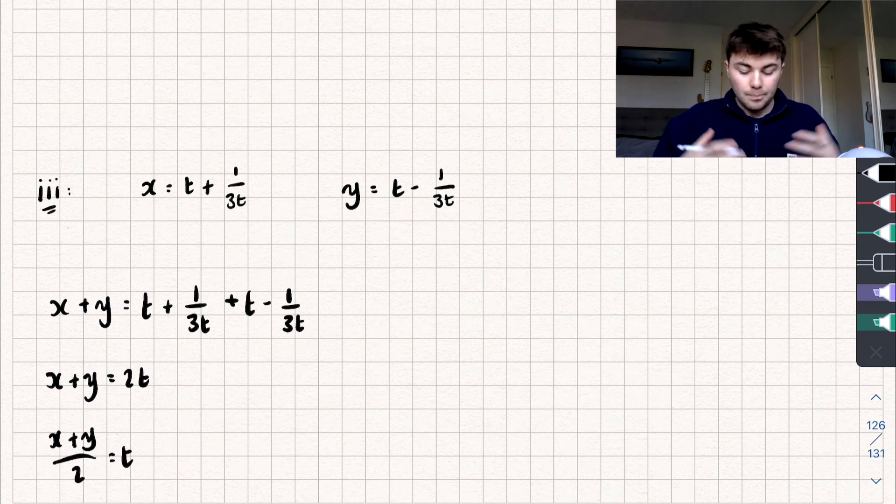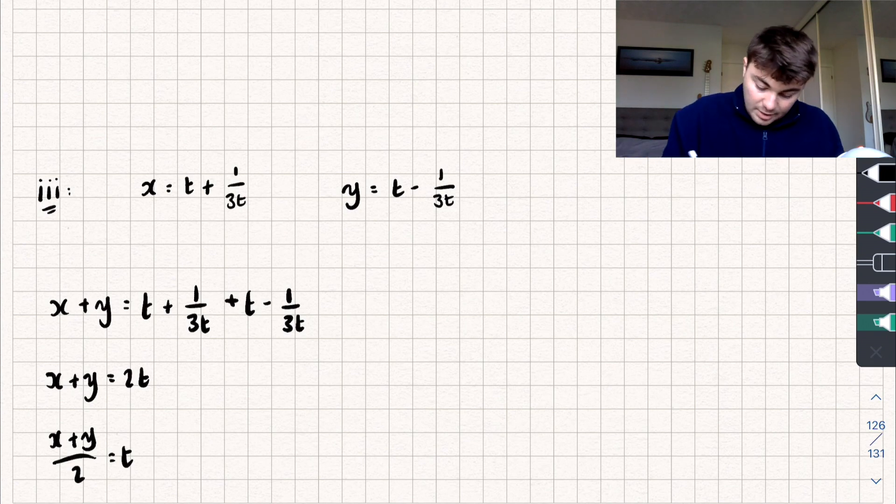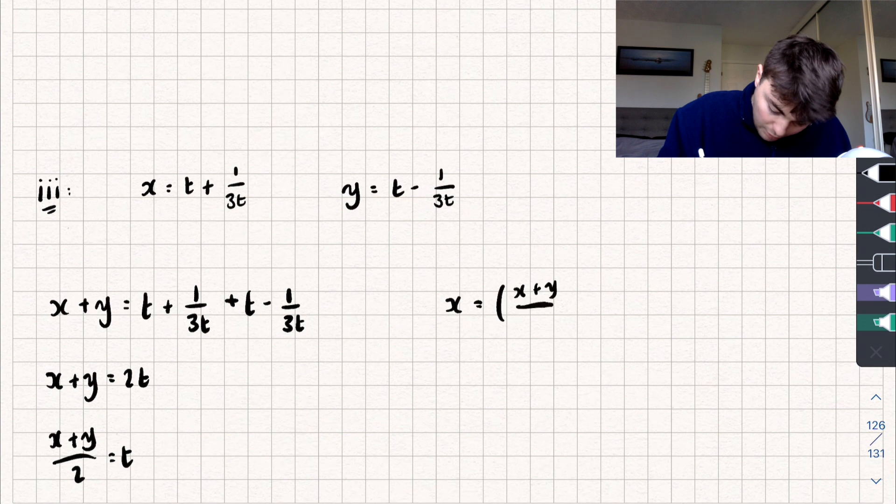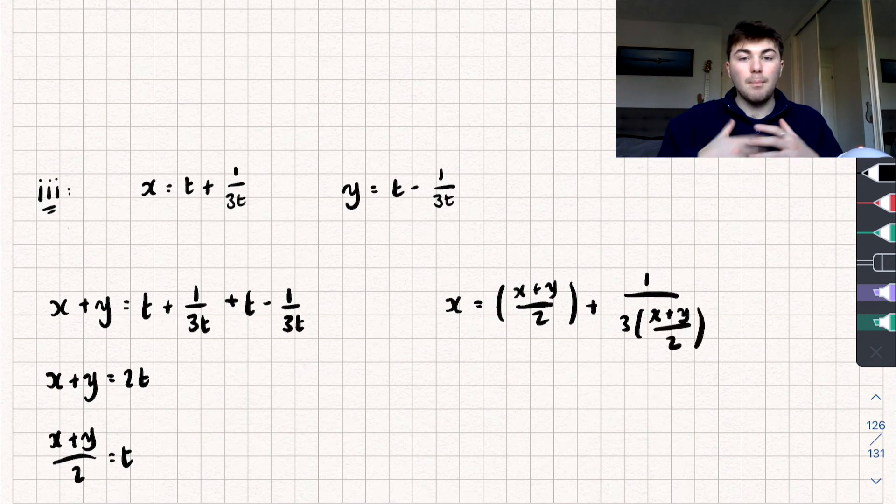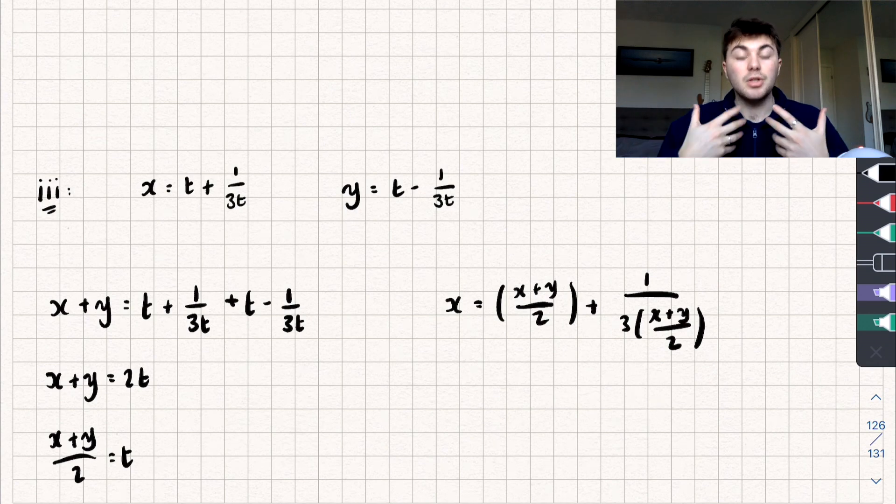And now we can substitute this into either our equation of x or y. So say we pick our equation of x, we get that x is now equal to x plus y over 2 plus 1 over 3 lots of x plus y over 2. And we could now expand and simplify and make this just a neater version of the equation. But you can see we've written it into a Cartesian equation form.